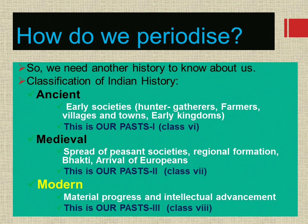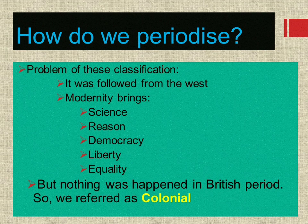In your 6th standard you studied about early societies, in 7th standard you studied the medieval period of India, and in 8th standard you are going to learn modern history. In this classification also we have some problems. Modernity brings science, reason, democracy, liberty and equality — followed from the West — but nothing of that sort happened in the British period. So we refer to this period as colonial.